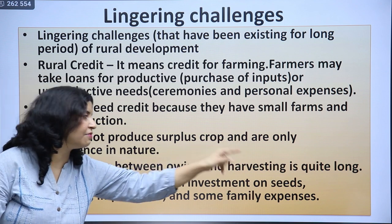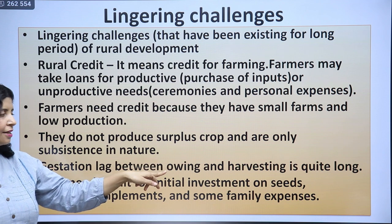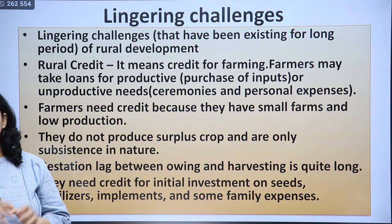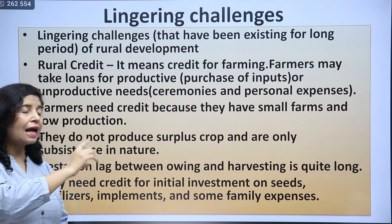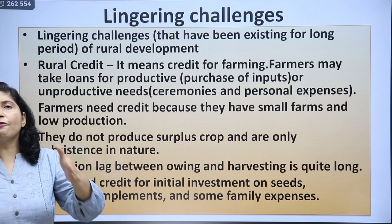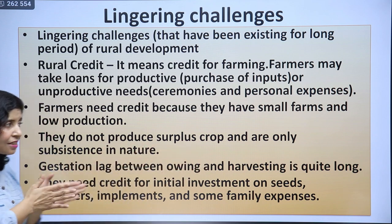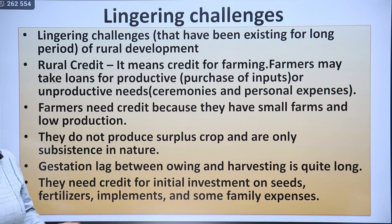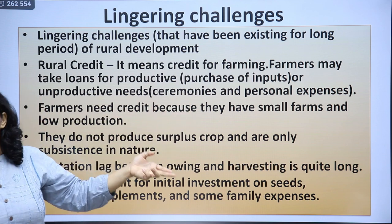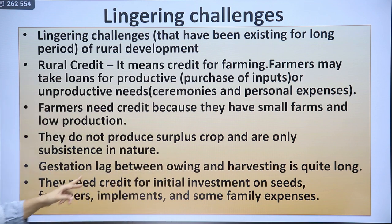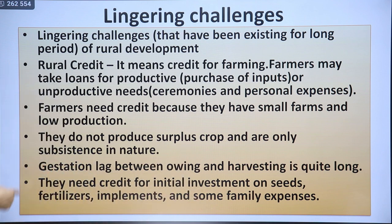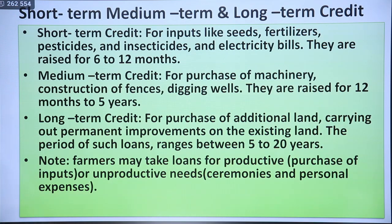The gestation lag between sowing and harvesting is quite long — normally 4 to 6 months for a crop to ripen. During that time, farmers need money for inputs like fertilizers, seeds, pesticides, and insecticides, and they need to take loans for initial investment on seeds, fertilizers, implements, and family expenses. These are the needs for which they take loans from landlords or money lenders.